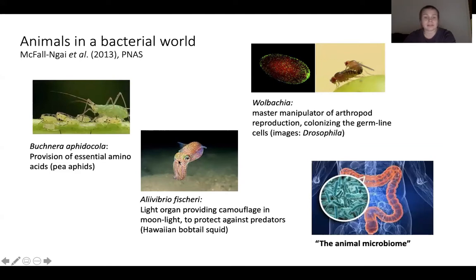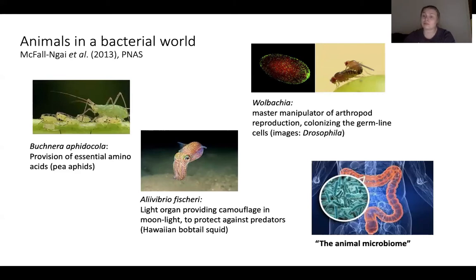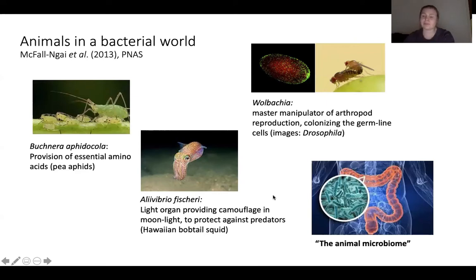In addition to these quite intimate one-on-one associations, most animals and plants also form associations with complex bacterial communities, also known as microbiomes. A famous example is the gut microbiome, and we know that the gut microbiome is very important for animal health, development, and nutrition.